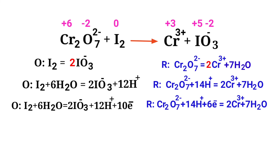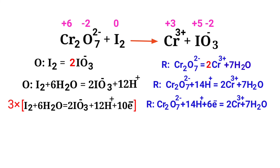The electrons lost in the oxidation half reaction must equal the electrons gained in the reduction half reaction. The oxidation half reaction has 10 electrons and the reduction half reaction has 6 electrons. To equalize them, multiply the oxidation half reaction by 3 and the reduction half reaction by 5.